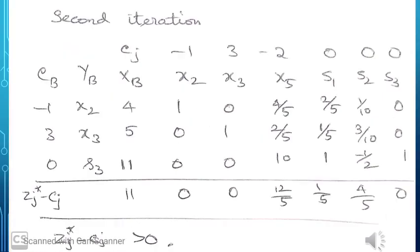Now all zj* - cj values are greater than or equal to 0, so the current basic feasible solution is optimal. We found the optimal solution. In the second iteration tabular column, we write everything and confirm optimality.